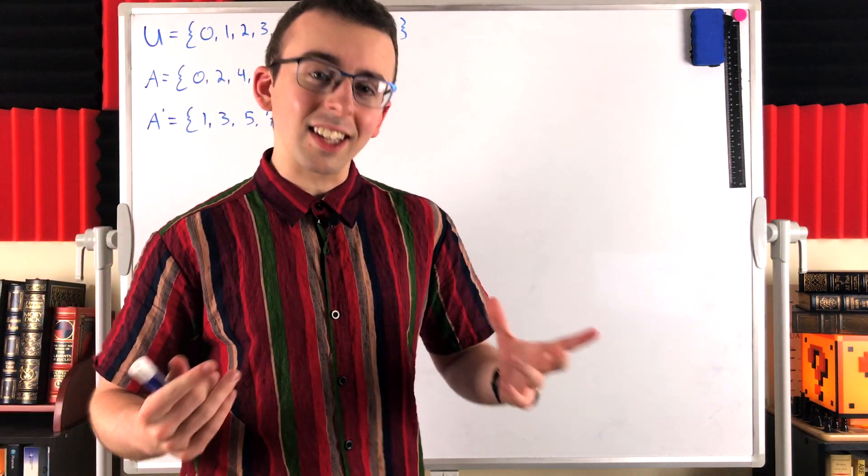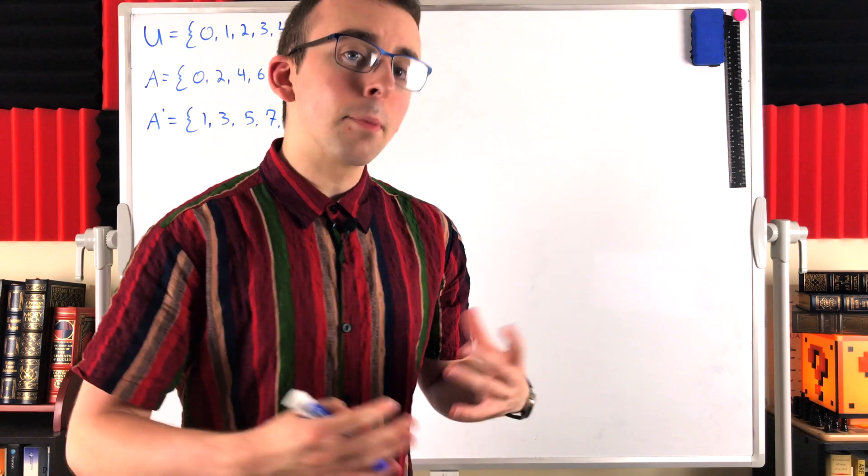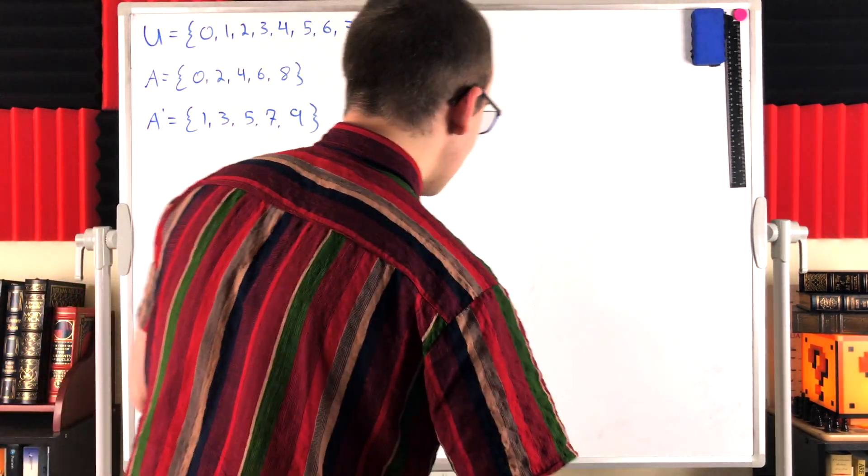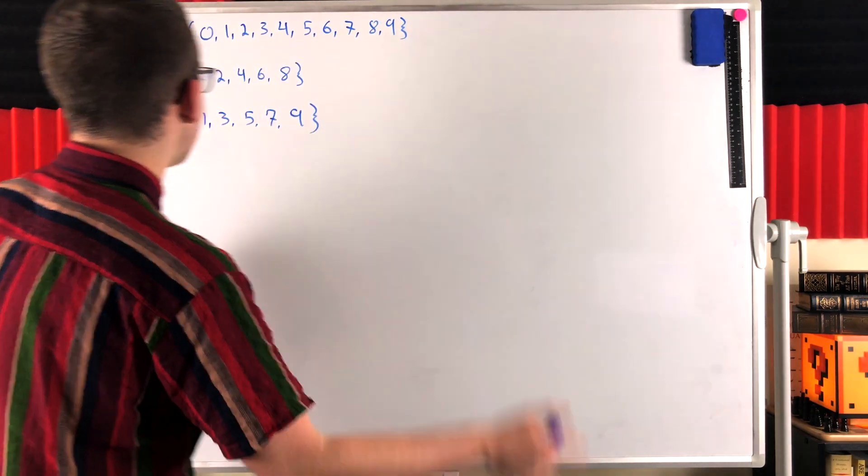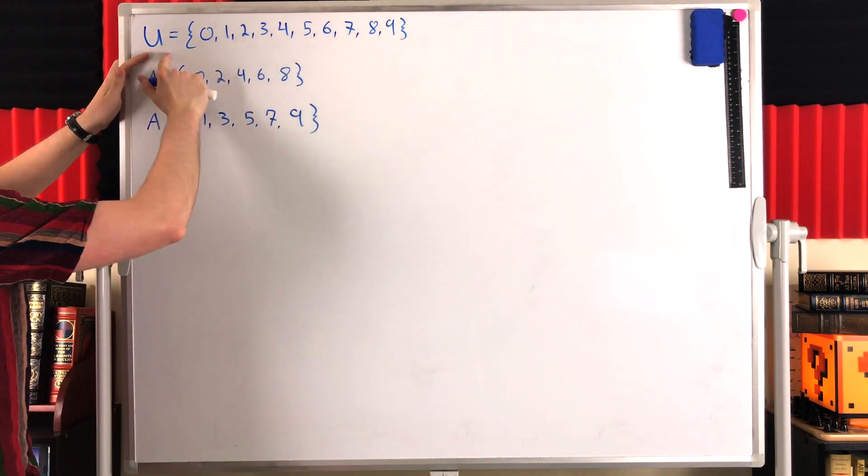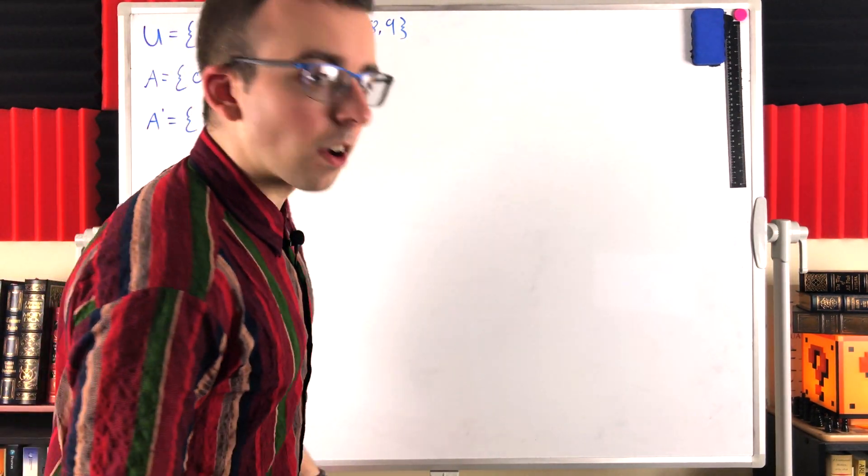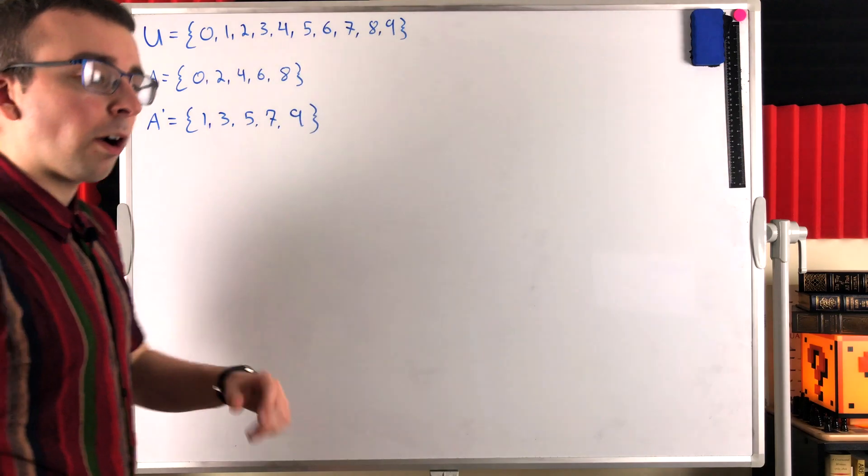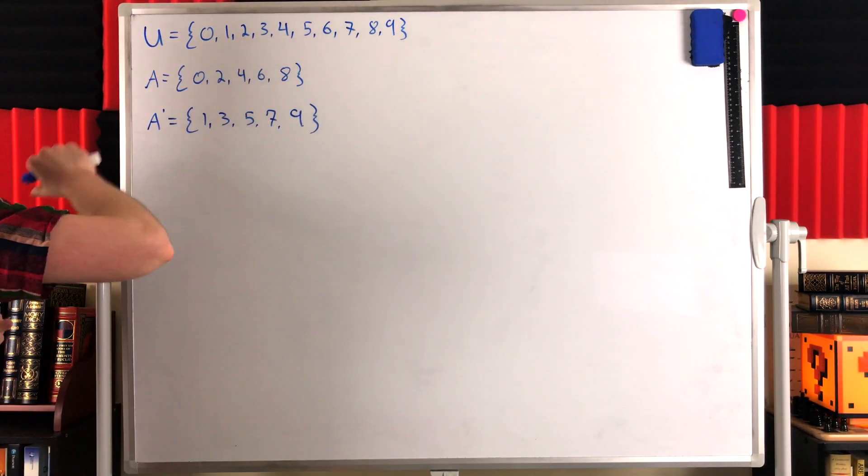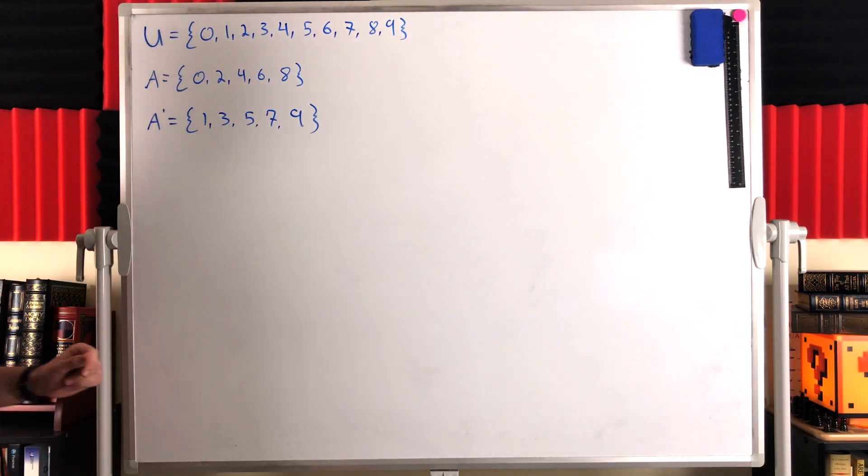Recall that we have to take the complement of a set with respect to some other set. Perhaps most commonly, we take what are called absolute complements. This is taking the complement of a set with respect to some universal set, which is often called U, and it could be any set depending on the context. The important part about considering a universal set is that every other set is always a subset of the universal set.